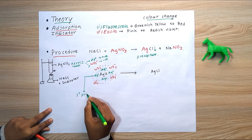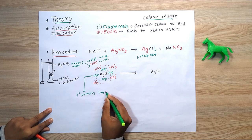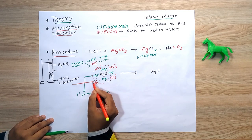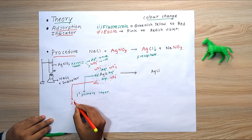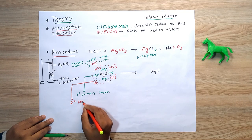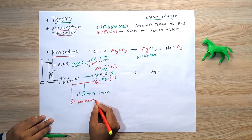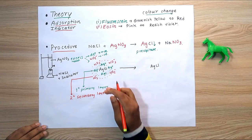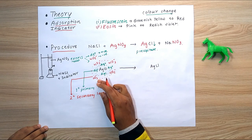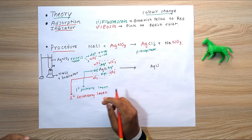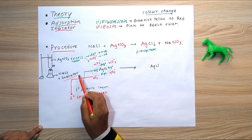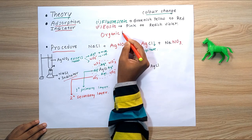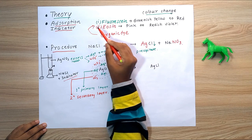The primary layer is the Ag+ layer and the nitrate ion forms the secondary layer. This process of layer formation around the precipitate is called nucleation. We also have the indicator, which is an organic dye present in this solution.